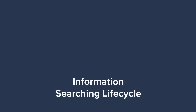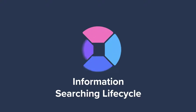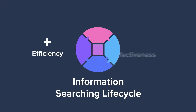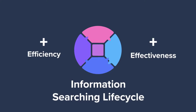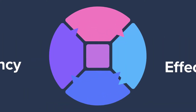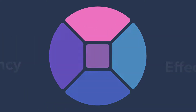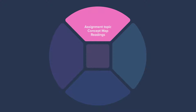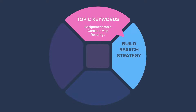The information searching life cycle shows the steps involved to maximize your efficiency and effectiveness in searching for new information. The life cycle begins when you analyze your topic for the main concepts and identify your topic keywords. Next, you need to build your search strategy using search techniques, expanding your main concepts and keywords with synonyms.